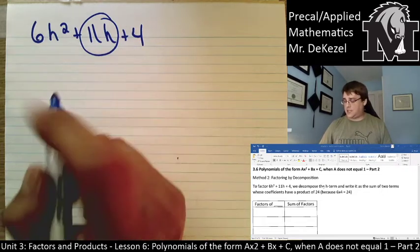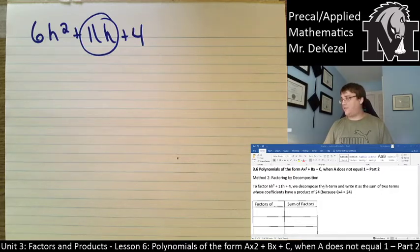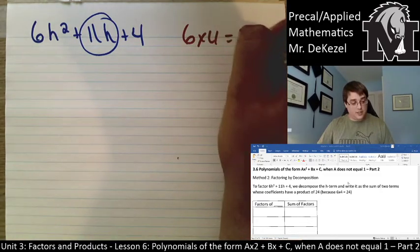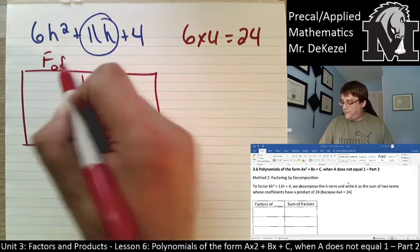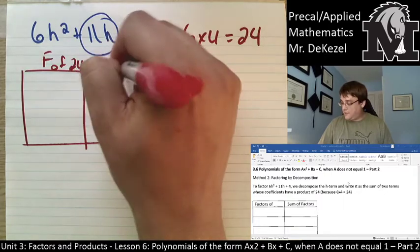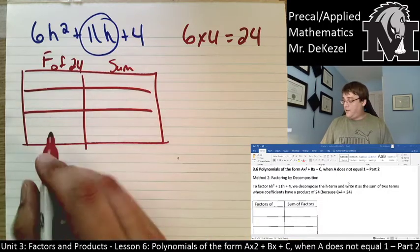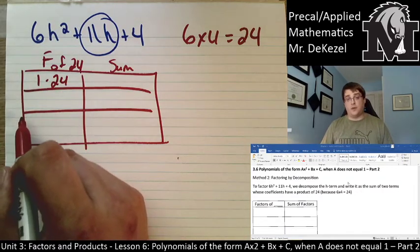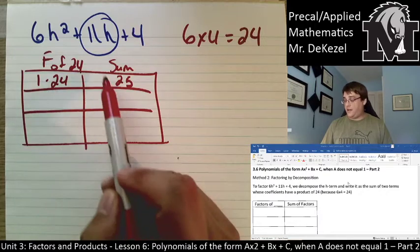And what we're going to do is we're going to take the first and the last number and multiply them together to find out what number we need to be finding the factors for. So, the first problem, we'll scroll down. So, 6 times 4 is equal to 24. So, in our table, where it says factors of 24 is on this side, and then the sum of those factors is on this side.